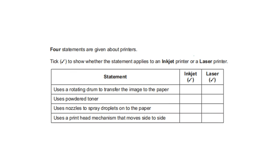Statements are given about printers — tick to show whether each applies to an inkjet or laser printer. Uses a rotating drum to transfer the image to paper — laser printer. Uses powder toner — laser printer. Uses nozzles to spray droplets on the paper — inkjet printer. Uses a print head mechanism that moves side to side — inkjet printer.